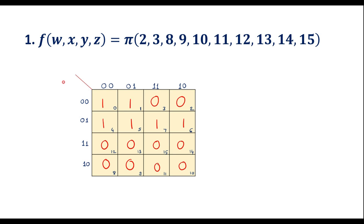Let this axis be wx and this axis be yz. In max term simplification, we are supposed to do the grouping of zeros. Here we can form a group of eight zeros.